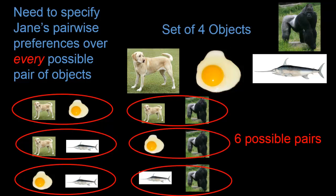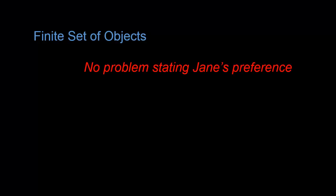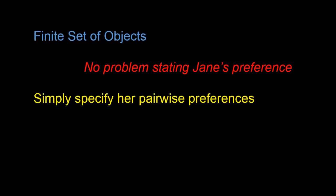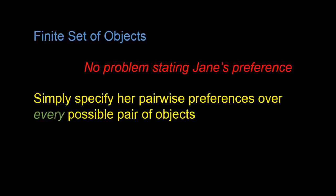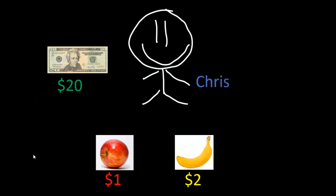To specify Jane's preference, we need to specify her pairwise preferences over each of these possible pairs of objects. With four objects, we need to make six statements to fully specify Jane's preference. This is a bit messier, but conceptually no more difficult. More generally, for any finite set of objects, there's not going to be any problem stating Jane's preference. It might be tedious, but all we need to do is specify her pairwise preferences over every possible pair of objects.